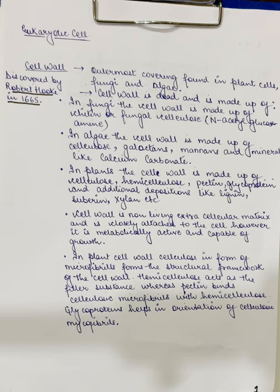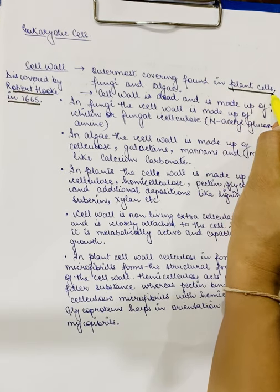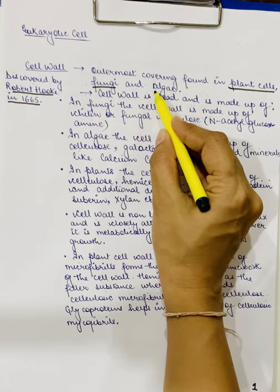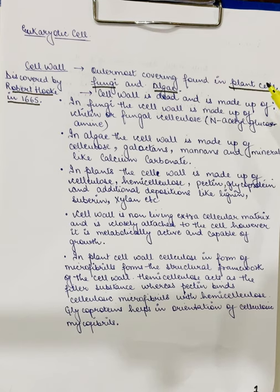Now, in which organisms do you find a cell wall? Cell wall is an outermost covering and it is found in plant cells, in fungi, and in alga. So, cell wall is present in plant cells, fungi and alga. We will be studying about the composition of cell wall in these three organisms — what the cell wall is made up of in plants, in fungi, and in alga.